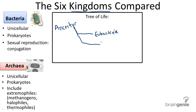Generally thought of as the next kingdom to evolve, archaea bacteria. These are also prokaryotic organisms that are unicellular, but they evolved with very different plasma membranes and genetic structures.